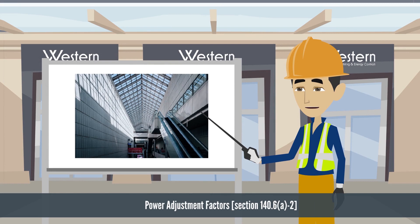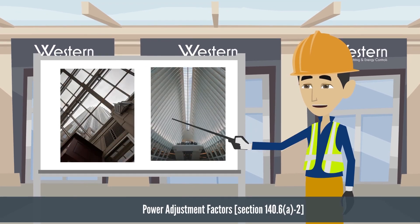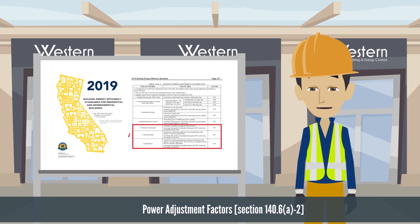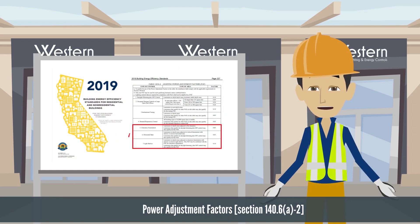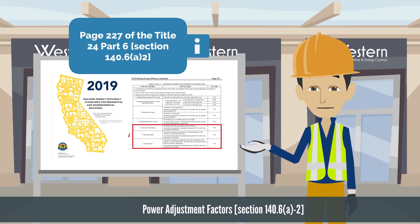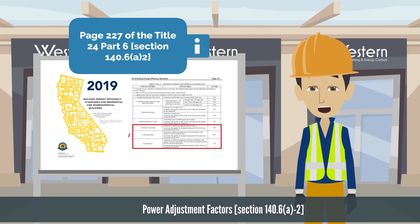The 2019 code also adds some new power adjustment factors that offer incentives for taking additional advantage of daylight. If you would like to take advantage of these incentives, please consult the table on page 227 of Title 24, Part 6, Section 140.6.